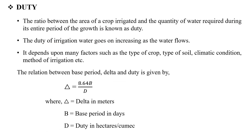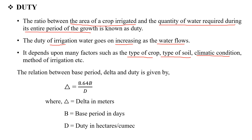Next, we are going to talk about duty. The ratio between the area of crop irrigated and the quantity of water required during the entire period of growth is known as duty. The duty-dependent factors are: type of crop, type of soil, climatic condition, and method of irrigation.